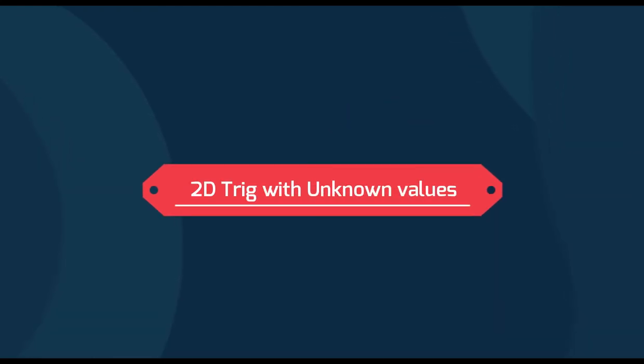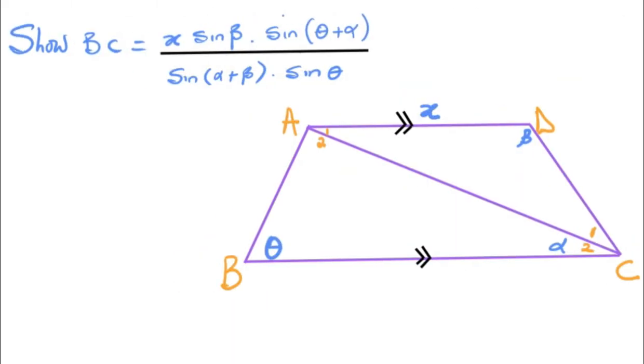So let us get into the second example, using 2D trig with unknown values. We have this question here which says show that BC is equal to x times sine beta times sine theta over sine alpha plus beta times sine theta.